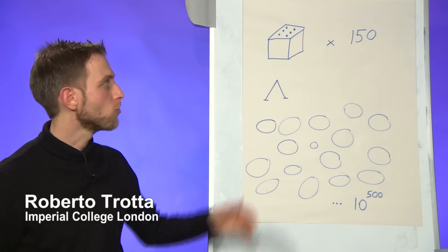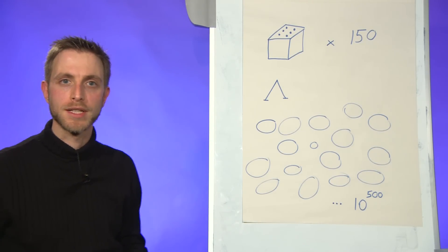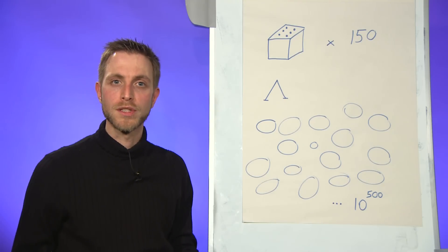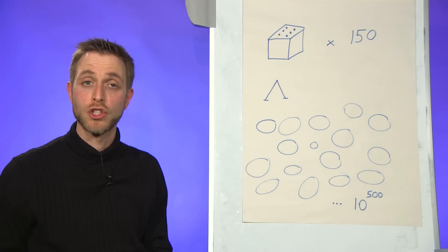Imagine entering a room with 150 dice on a table and all of them showing the number 6. You would immediately assume that something is wrong with those dice. They've not been thrown at random because it's very improbable that they would land just like that.